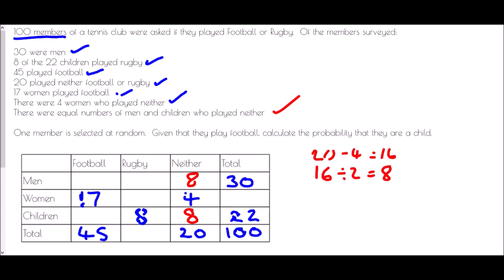The rest of the table comes from working out. Let's start with the total columns. There are 30 men and 22 children, that is 52 in total. So 52 taken away from 100 leaves 48 women. In the women row, 17 play football and 4 play neither — that is 21. But in total there should be 48 women, so 27 are left for rugby. Looking at the total row: 45 playing football plus 20 playing neither is 65, but we need 100 in total, so there must be 35 who play rugby.